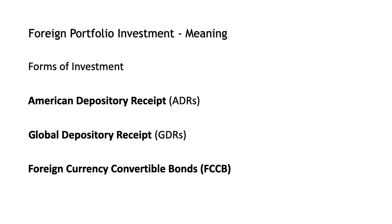The ceilings on such investment are maintained by the RBI. The types of foreign institutional investments in India include hedge funds, foreign mutual funds, sovereign wealth funds, pension funds, trusts, asset management companies, endowments, etc. Foreign investment in Indian securities is made through purchase of global depository receipts.